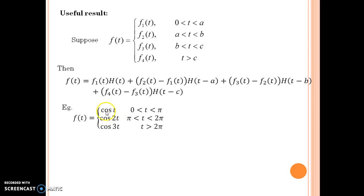So it would be cosine 2t minus cosine t times H(t - pi). Then last would be added with cosine 3t minus cosine 2t times H(t - 2pi).